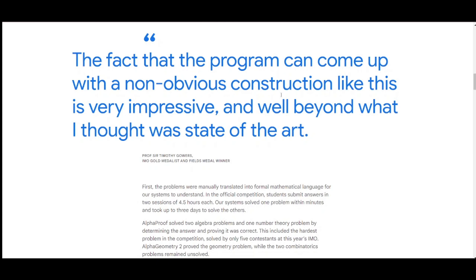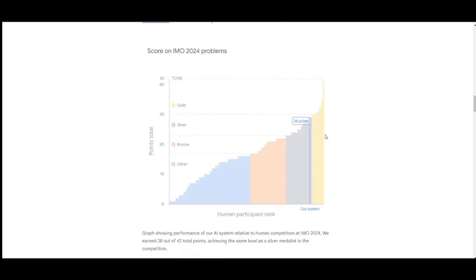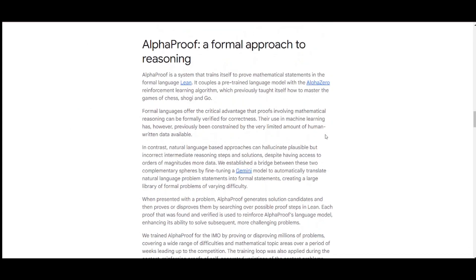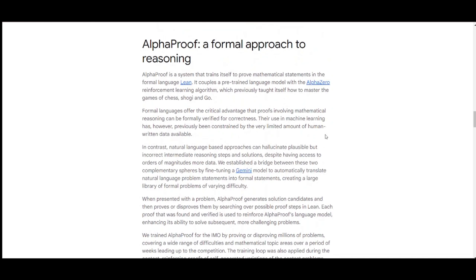Each of the six problems can earn 7 points with a total maximum of 42. Google's AI system achieved a final score of 28 points, earning a perfect score on each problem solved, equivalent to the top end of the silver medal category. This year, the gold medal threshold starts at 29 points and was achieved by 58 of 609 contestants at the official competition.